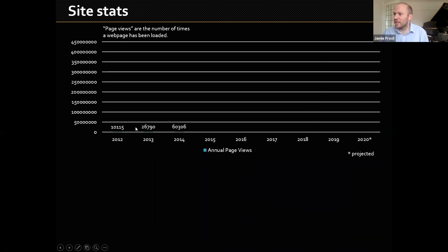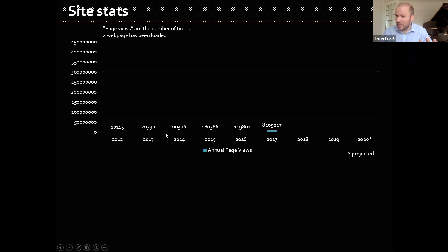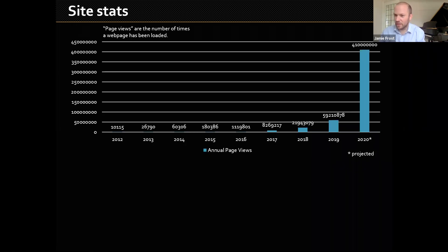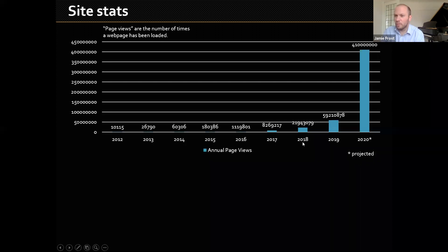Site stats — when I started teaching I was getting 10,000 page views in one year; I get that in about five minutes nowadays. I tried logging the Y values and worked out the product moment correlation coefficient was about 0.98 — very strong growth. There were 59 million page views last year and the projection for this year is 410 million. When lockdown started I had three times as many page views as a typical day, had to move server, and over the Easter holiday had to recode everything to cope with around 1.2 million page views a day.